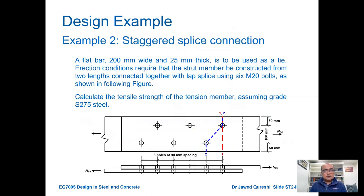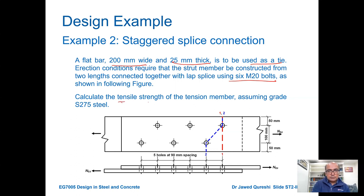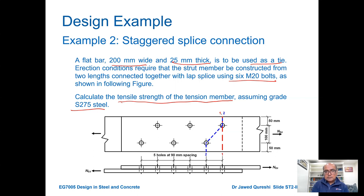Now moving to our first example: staggered splice connection. A plate bar is 200 mm wide and 25 mm thick, used as a tie. M20 bolts are used and we have to work out the tensile strength of the tension member assuming grade S275. The staggered pitch S is 90 mm and P, perpendicular to the applied load, is 100 mm. There are two failure sections — a red one passing through only one bolt and a blue one passing through two bolts, which is the staggered one we will consider.